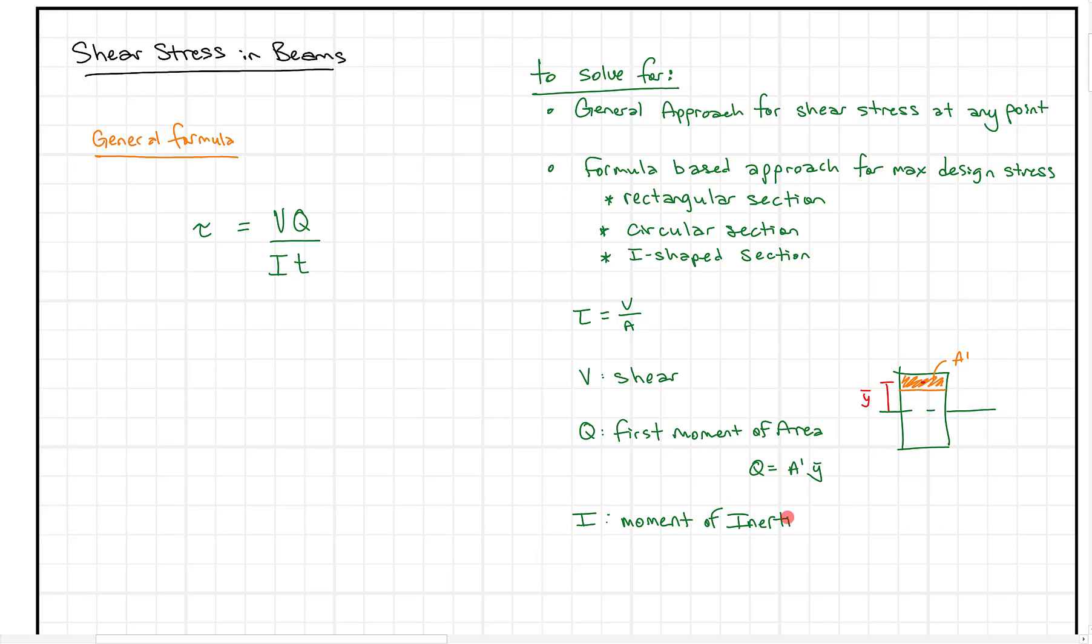So we also have I. I is the second moment of area, or also known as the moment of inertia. This is another formula you can look up or derive using calculus. In general what we've done to this level is just looked at base times height cubed over 12 for a rectangle. And then T here is the thickness where you're finding the shear.